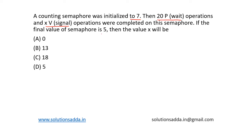If the final value of the semaphore is 5, then the value of x will be? In semaphores, P or wait operation means decrementing the value of the counting semaphore by 1, and V or signal means incrementing the value of the counting semaphore by 1.